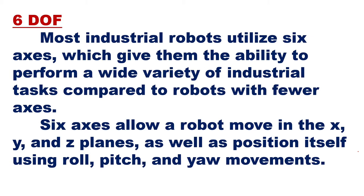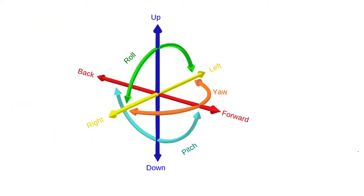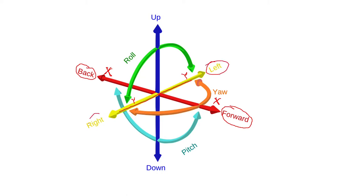Roll, pitch, and yaw come into play when we speak about rotational motion. In this figure, you can define translation motion and rotational motion. The x-axis shows forward and backward movement. The y-axis gives left and right movement. The z-axis gives up and down movement — this is the translation motion.